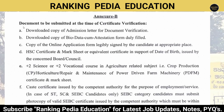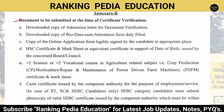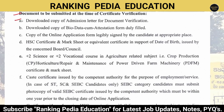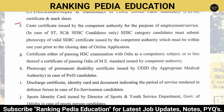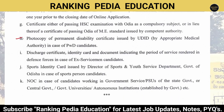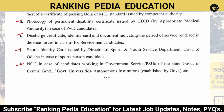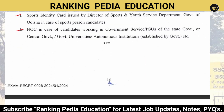Documents to be submitted at certificate verification include: downloaded copy of admission letter, bio-data cum attestation form, copy of online application, HSC mark sheet, Plus Two Science or Plus Two Vocational course in agriculture-related subject mark sheets, caste certificate for SC/ST/SEBC, photocopy of permanent disability certificate for PWBD, discharge certificate, sports certificate, and NOC for government servants or PSU employees.